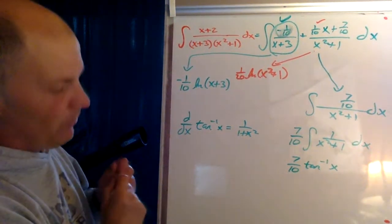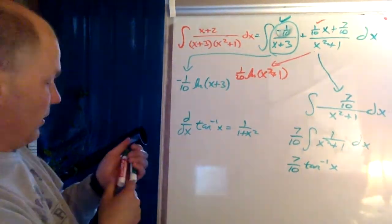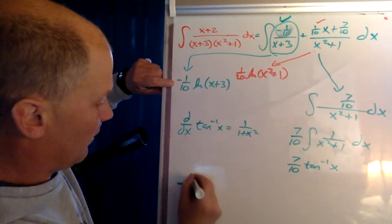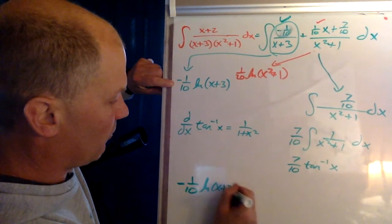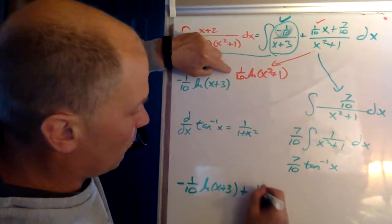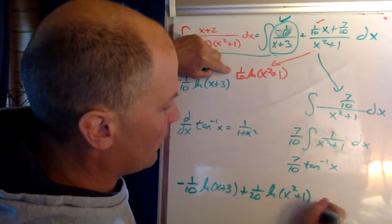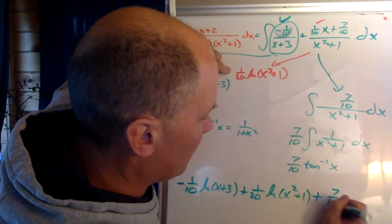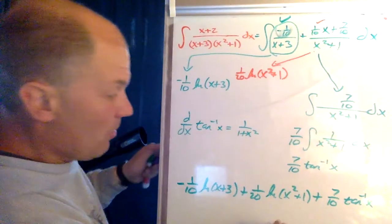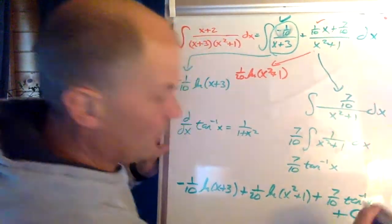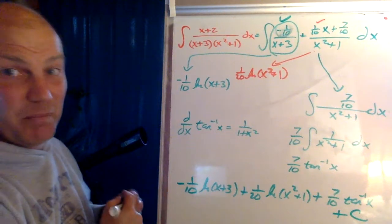And I'm going to rewrite the whole answer down here. The whole answer is negative one tenth ln of x plus three plus one twentieth ln of x squared plus one plus seven tenths inverse tangent of x plus c. Don't forget the plus c. I just feel like I was running out of room over there. But that is it.